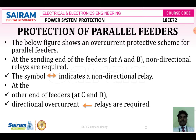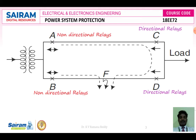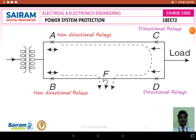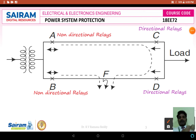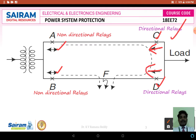In the protection of parallel feeders, there are two types of relays. One set of relays are called non-directional relays. In this parallel feeder diagram, relays A and B are called non-directional relays, and relays C and D are called directional relays. Non-directional relays are represented with arrow marks on either side, while directional relays have the arrow mark directed at only one side. If the arrow mark is directed at only one side, it is called a directional relay. If it is directed at either side, it is called a non-directional relay.